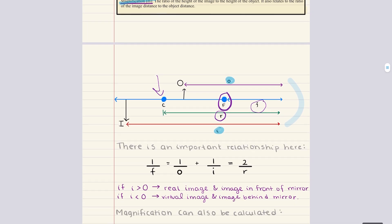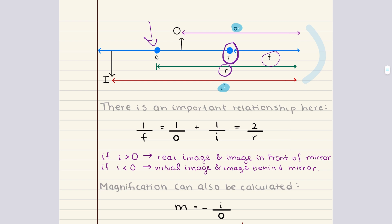There's an important relationship linking these distances, known as the mirror equation: 1/f = 1/o + 1/i = 2/r, where r is the radius of curvature. This equation allows us to calculate the position of an image formed by a spherical mirror. By convention, if the image distance i is positive, the image is real and located in front of the mirror. If i is negative, the image is virtual and appears behind the mirror.